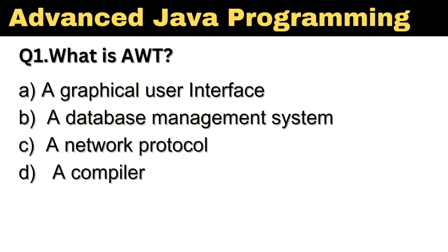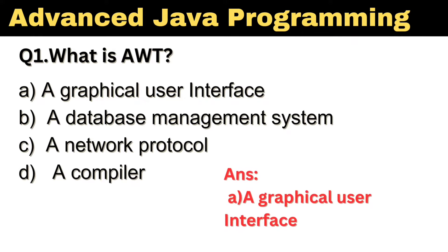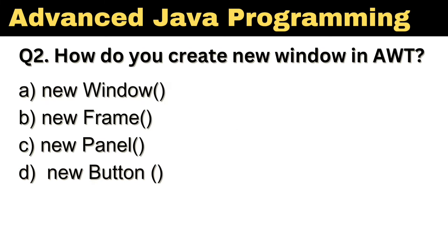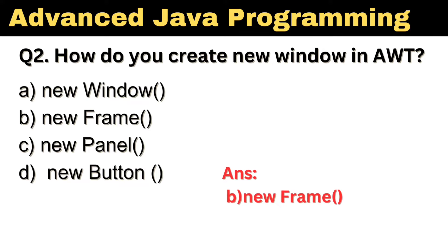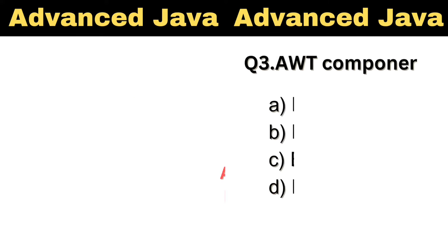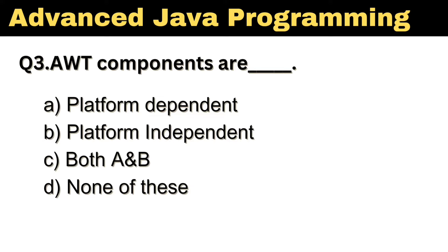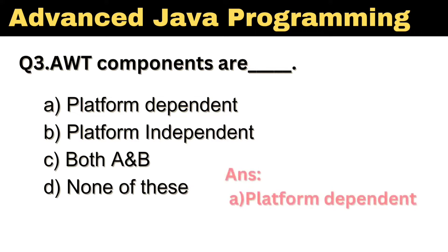Question No. 1: What is AWT? The right answer, Option A, Graphical User Interface. Question No. 2: How do you create a new window in AWT? The right answer, Option B, New Frame. Question No. 3: AWT components are dash. The right answer, Option A, Platform Dependent.